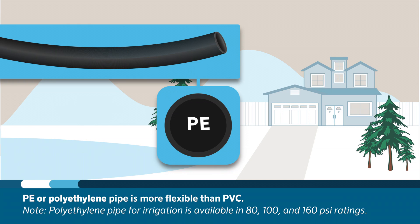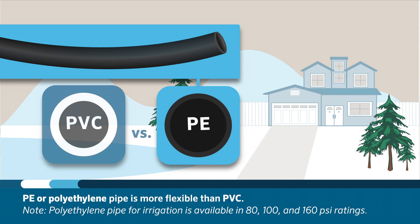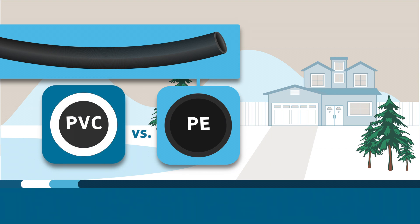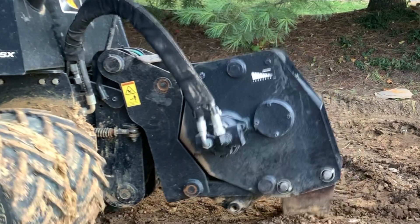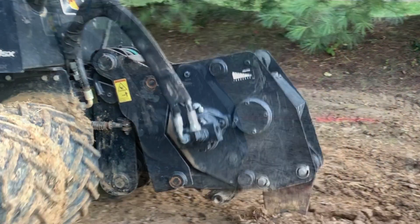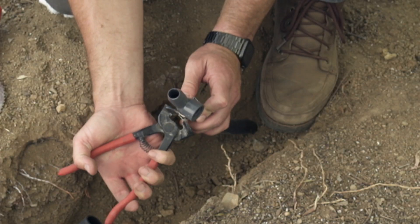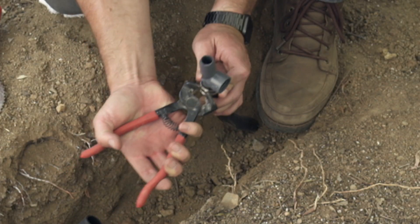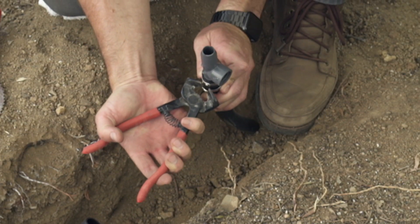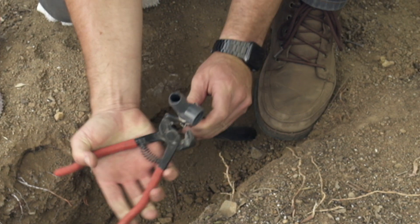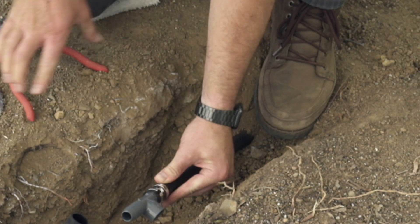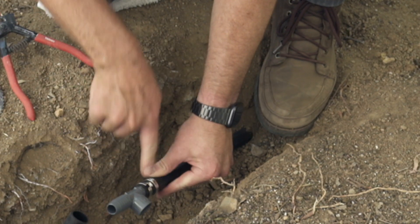PE or polyethylene is a flexible, less rigid pipe, normally thinner walled than PVC, and is commonly used in cold weather climates or where pipe can be pulled through the soil using a vibratory plow. Polyethylene pipe requires insert fittings, also known as barbed fittings, and pipe clamps to keep the tube fastened securely to the fitting.